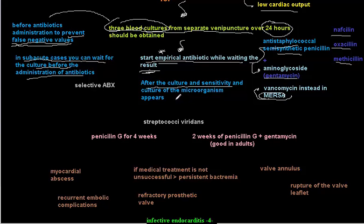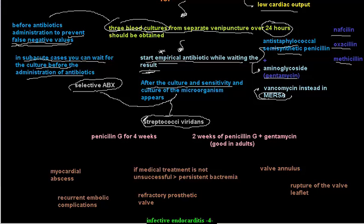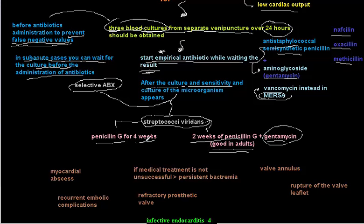Once culture and sensitivity results are available, you use selective antibiotics. For example, the most common cause — Streptococcus viridans — is treated with four weeks of penicillin G, or two weeks of penicillin G plus gentamicin (aminoglycosides) in adults. In children, four weeks of penicillin G is given.